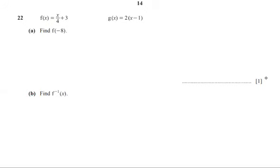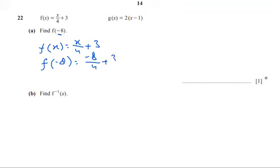Solution number 26. f(x) is given as x/4 + 3, and g(x) is given as 2(x - 1). We have to find f(-8). So f(-8) will be -8/4 + 3. Since -8/4 = -2, we get -2 + 3 = 1. So f(-8) is equal to 1.